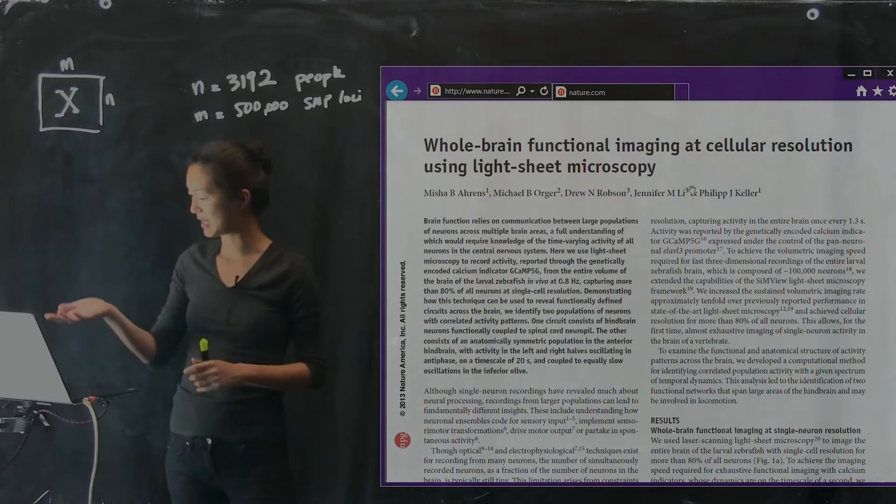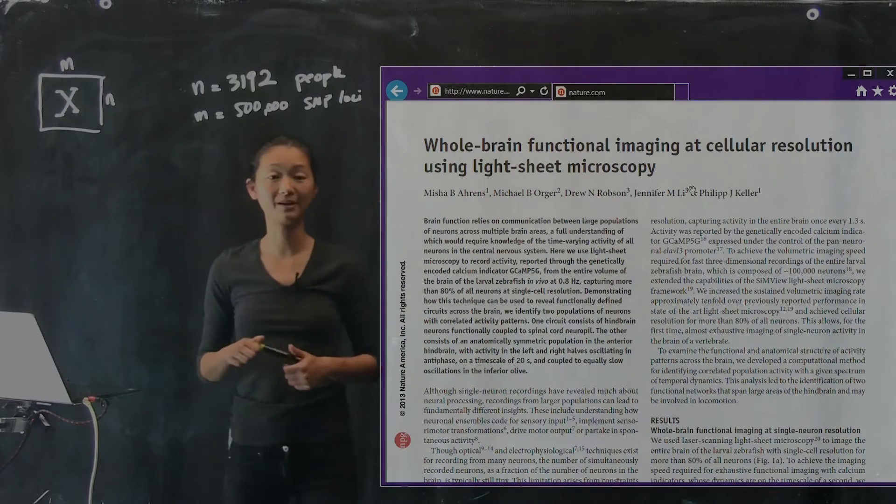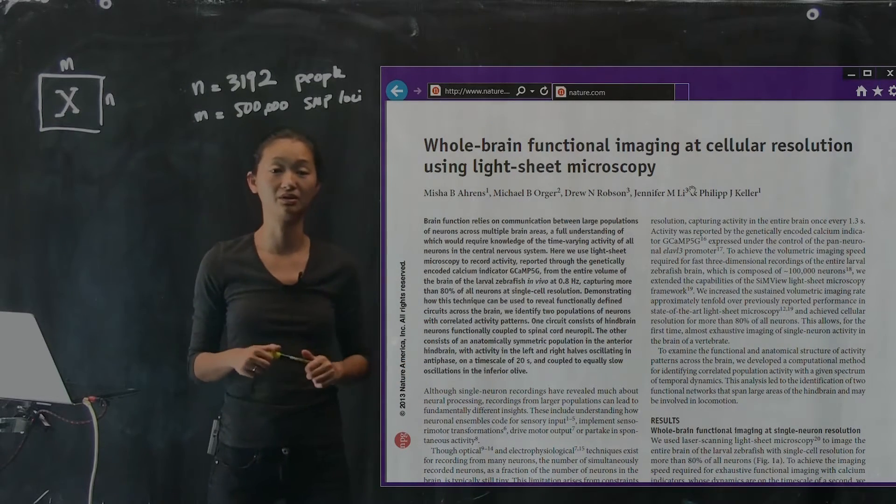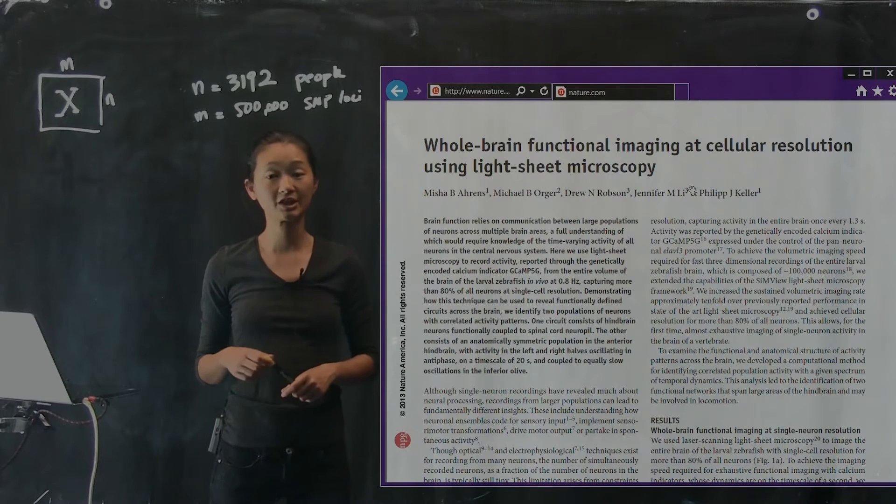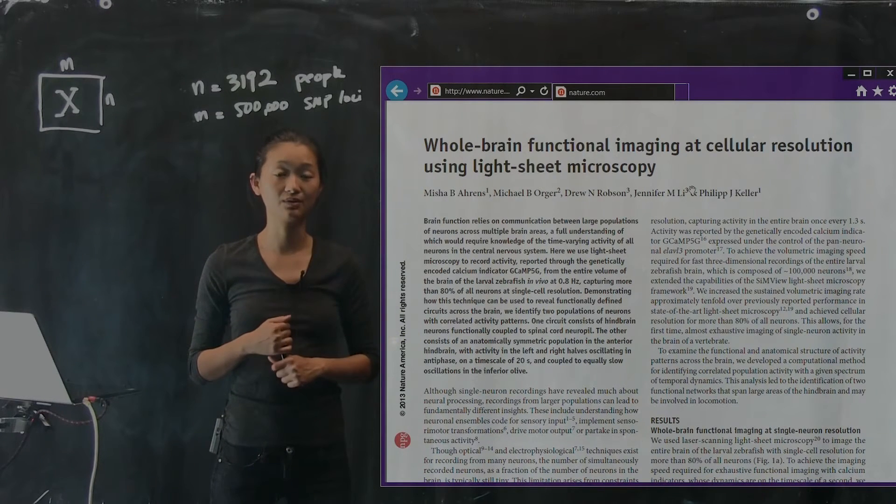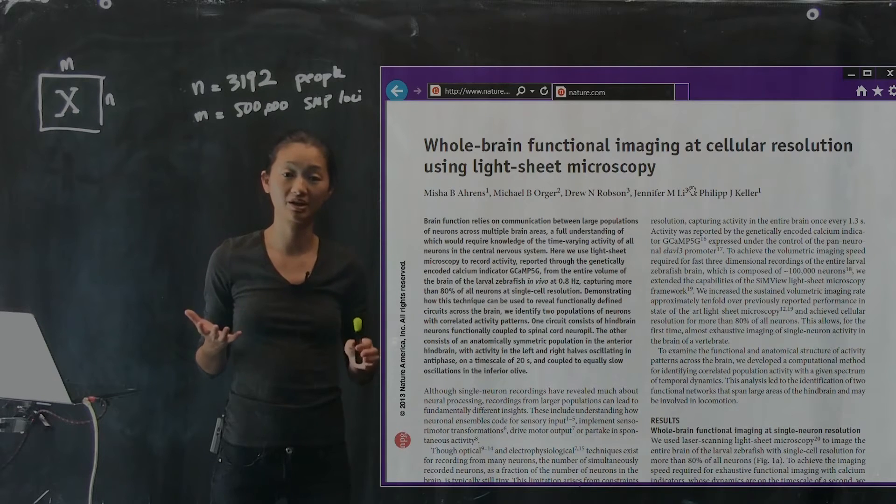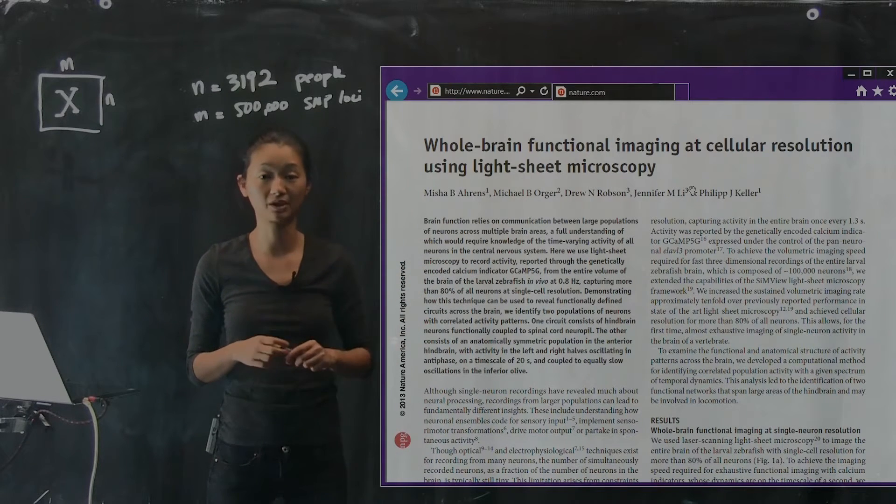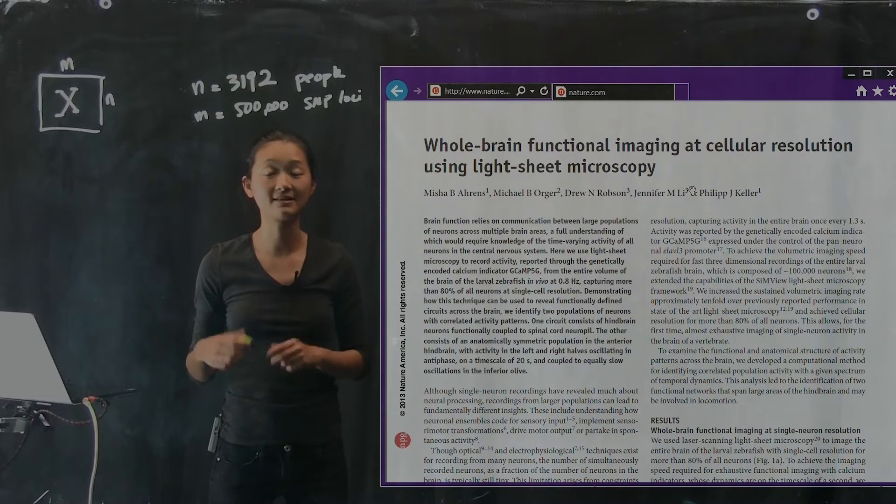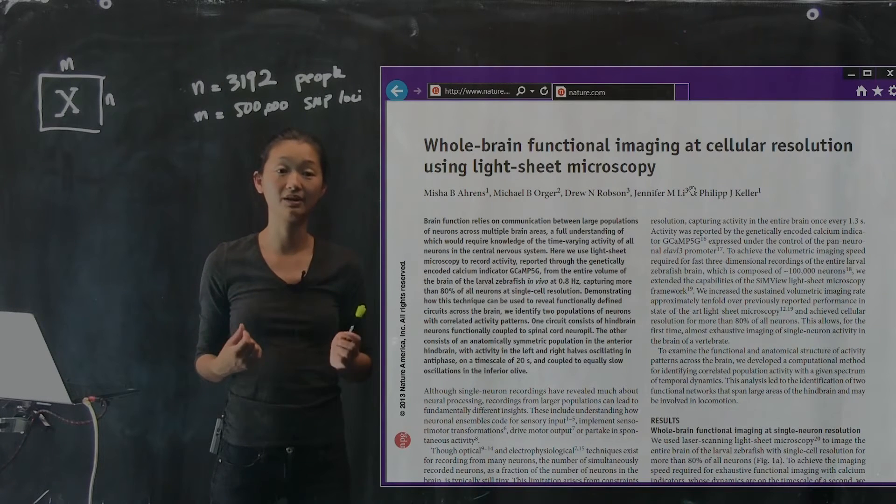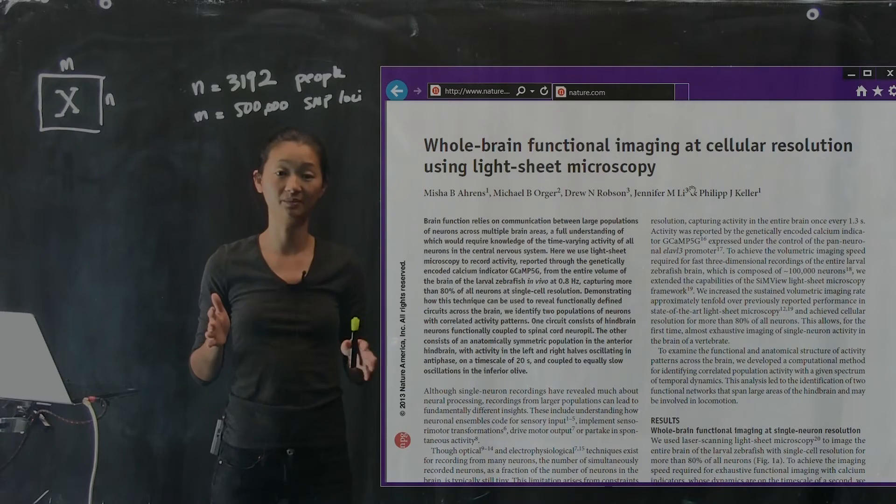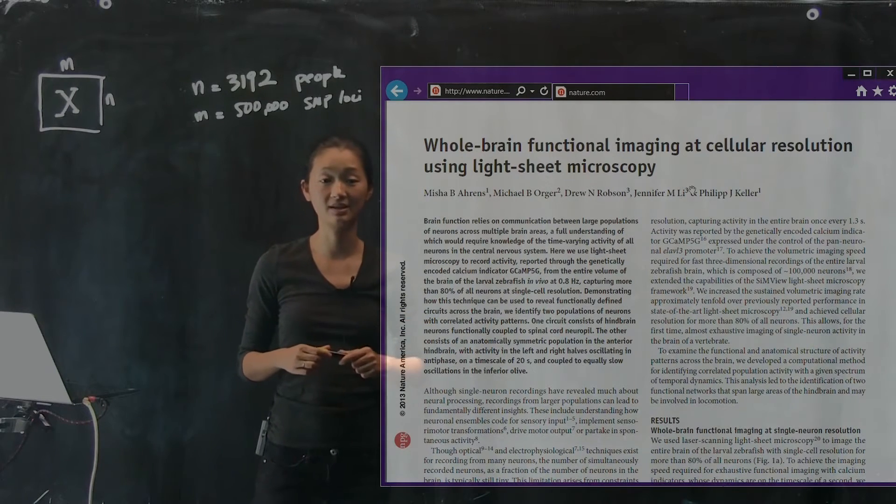So I'm going to show you a different paper. And this paper is interesting because instead of measuring a lot of individuals, they are only measuring one individual at a time. So this paper by Misha Ahrens et al. is called Whole Brain Functional Imaging at Cellular Resolution Using Light Sheet Microscopy.